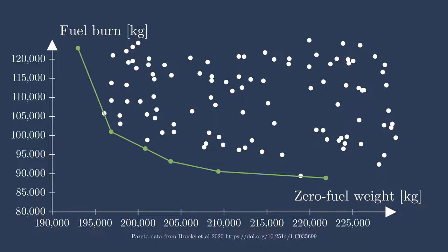This is the set of designs that cannot be improved in one objective without sacrificing performance in the other objective. This green line here shows all of the designs that are, quote, Pareto optimal.